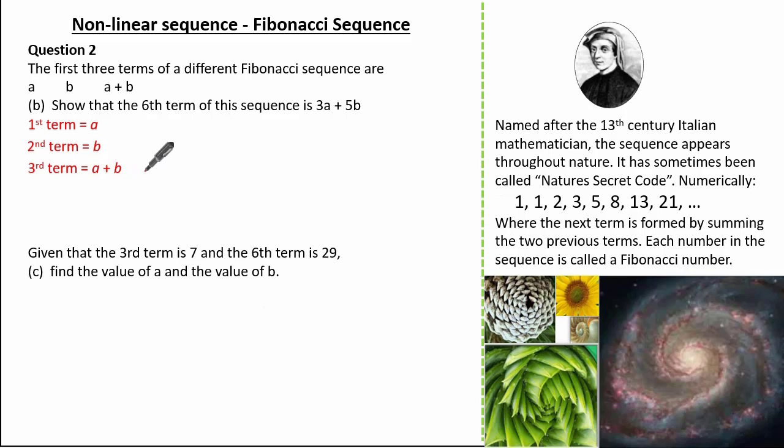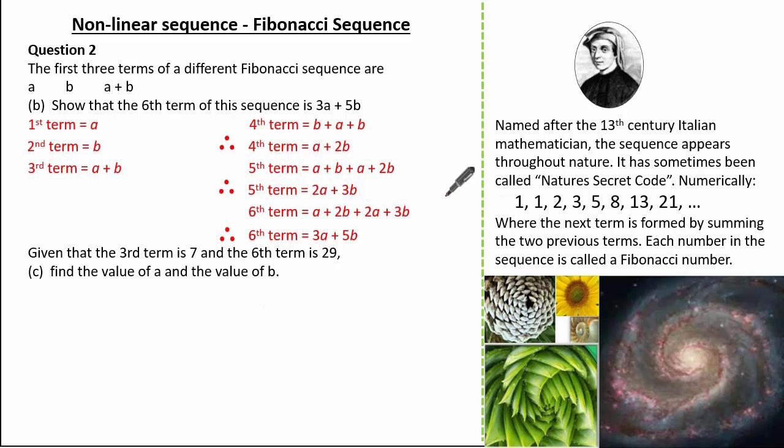Now to work out the fourth term, the fourth term is where we add b to a plus b. So collecting our like terms, I have the fourth term is a plus 2b. Now to work out the fifth term, it's the fourth term add the third term. So it's a plus b add our a plus 2b. Collecting all our like terms gives us our fifth term to be 2a plus 3b. So our sixth term is a plus 2b add our 2a plus 3b. Collecting all our like terms gives us our sixth term to be 3a plus 5b, which is what's confirmed in our question.